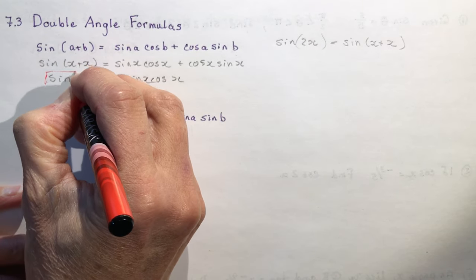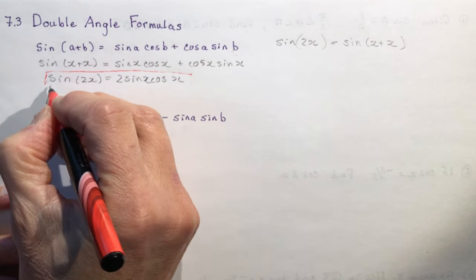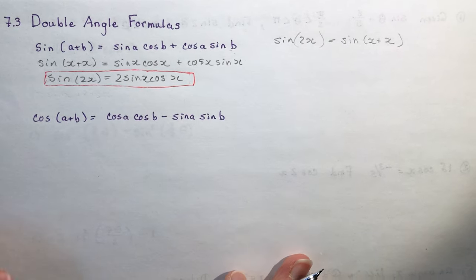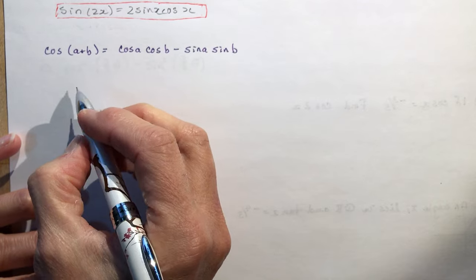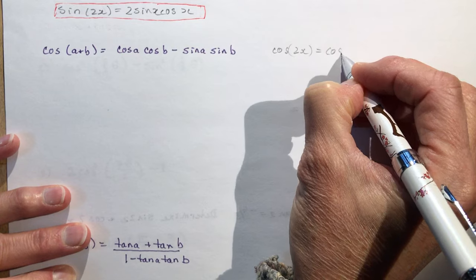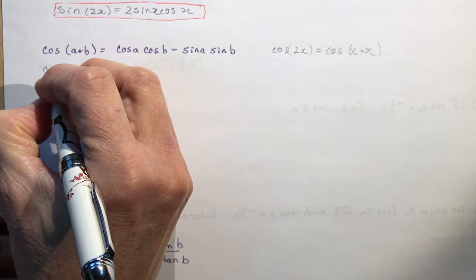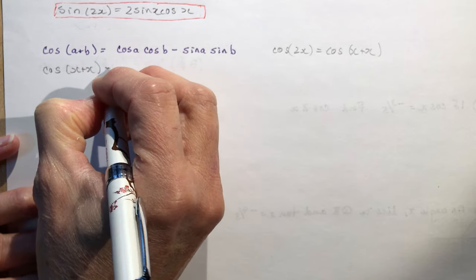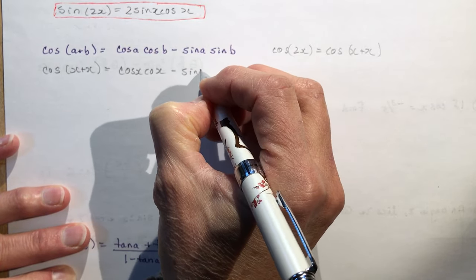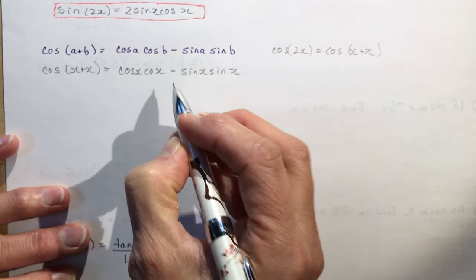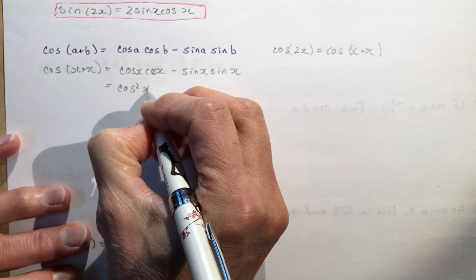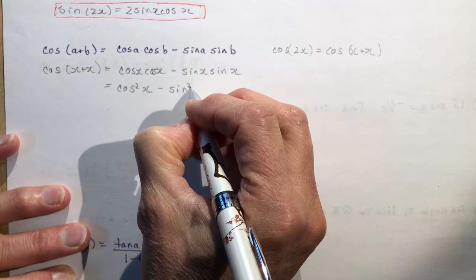This formula shows up a lot when you're doing the identities lesson — this is an identity and we do some proofs. For cos of A plus B, we'll do it the same way. Instead of cos 2x, we'll write the cos of x plus x, and plug that into the formula. We get cos x times cos x minus sine x times sine x, which is cos squared x minus sine squared x.